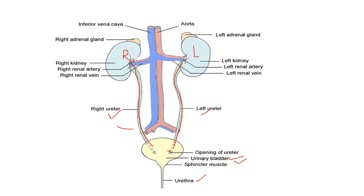Urine is stored in the urinary bladder until it is released. Now, how is urine produced? You can see arteries and veins here. The aorta brings unfiltered blood to both kidneys. This blood is unfiltered. The kidney's job is to filter this blood. After filtration, the blood passes back through the inferior vena cava to the body.